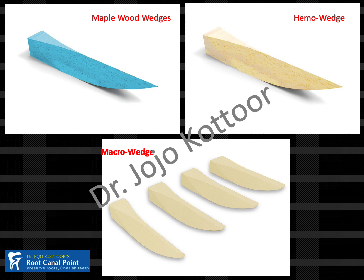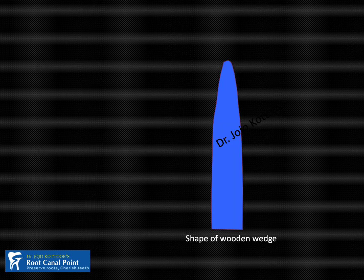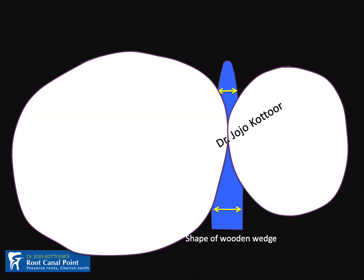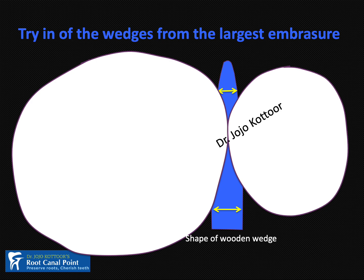Polydentia also produces macro wedges, a type of maple wedge specifically designed for large embrasures. It is generally recommended that the wooden wedge should be placed from the largest embrasure — the palatal embrasure. This is because the width of the wedge towards the tip is smaller than towards the handle. So, to get predictable matrix band adaptation towards the gingival cavosurface margin, we must place the wooden wedge from the largest embrasure.